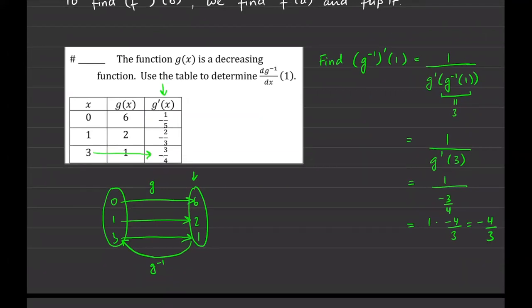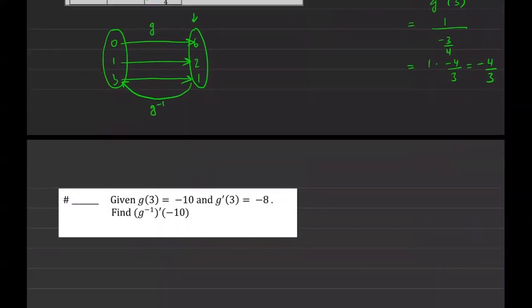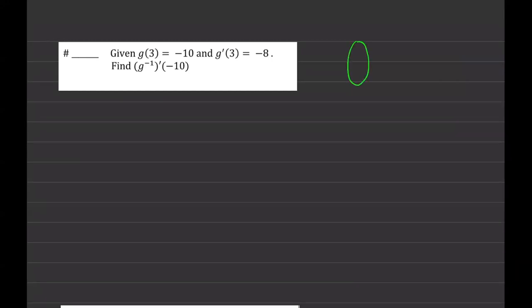One thing to point out: make sure your letters are consistent throughout. I chose a final example where there are different letters — f and g — and I'd recommend making all variables consistent before starting. We're given g(3) = −10, which means g maps 3 to −10, and g inverse maps −10 back to 3. We're also told g'(3) = −8, and we're asked to find (g⁻¹)'(−10).